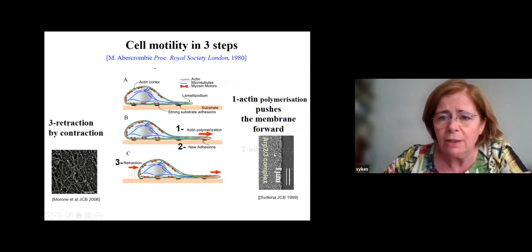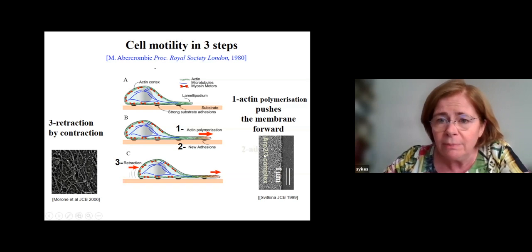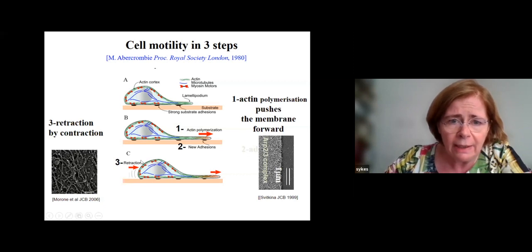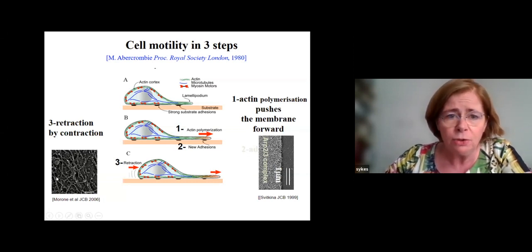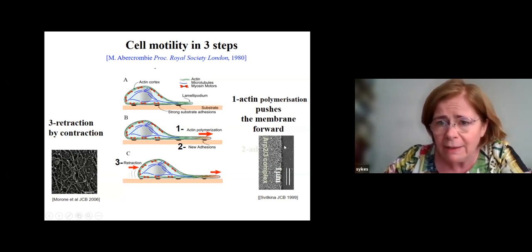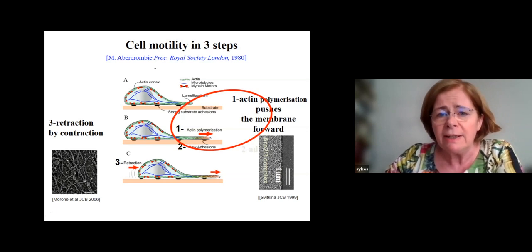If you look at how actin filaments are organized, you find a branched actin network that is able to push the membrane forward. Here the membrane has been removed — it's the interior of the cell. At the back of the cell, you have the same style of organization with actin filaments that are put under tension by molecular motors shown in red. So the actin filaments are in green, the molecular motors in red; this region can contract, whereas at the front, simple actin polymerization of filaments pushes it forward.